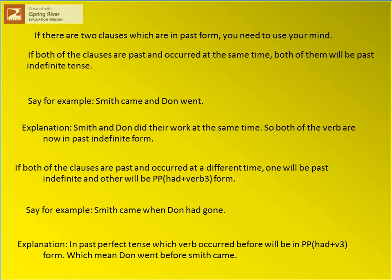Say for example, Smith came when Done had gone. In past perfect tense, whichever verb occurred before will be in had plus V3 form. This means Done went before Smith came.